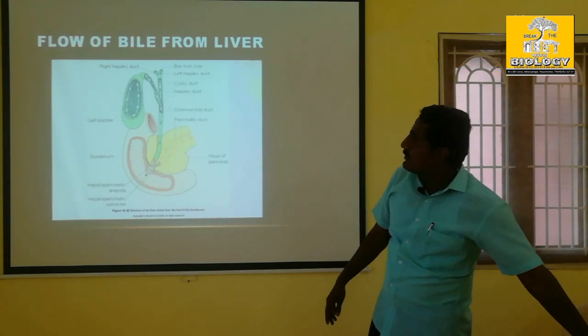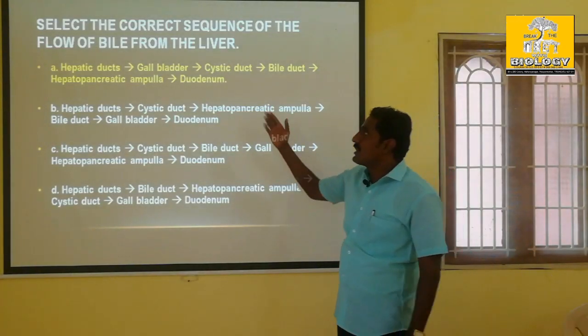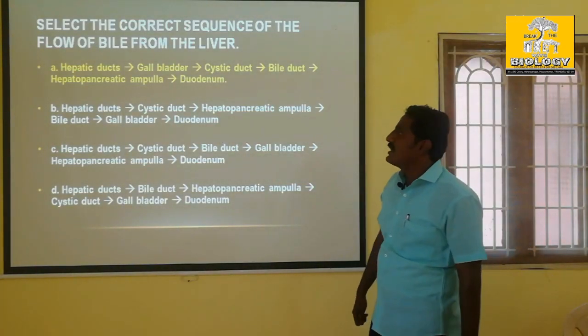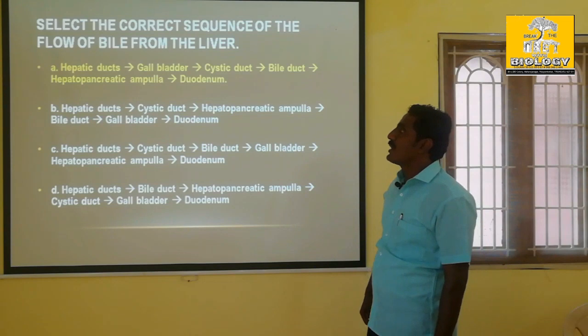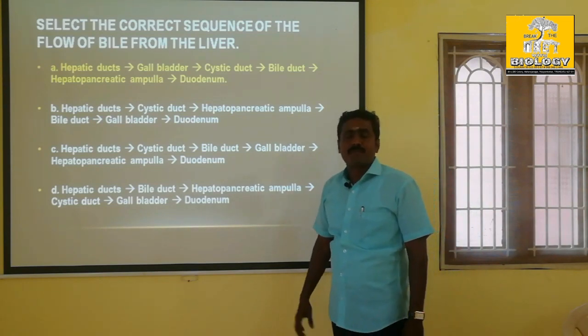So the answer is: Hepatic Duct, Gallbladder, Cystic Duct, Common Bile Duct, Hepatopancreatic Ampulla, and Duodenum.